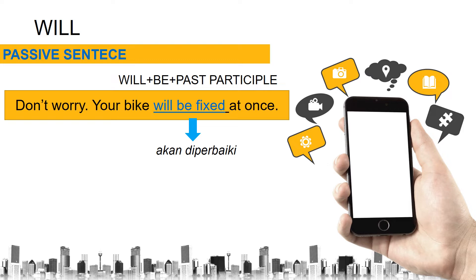Now let's look at the formulation of how the passive sentence is constructed with 'will.' We have 'will,' and then together with 'be,' and right after 'be' it is followed by a past participle. So remember: when we construct a passive sentence with 'will,' the formulation is — will + be + past participle.